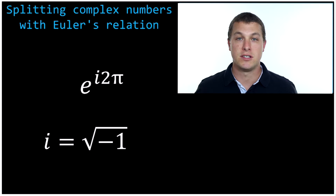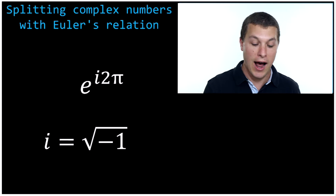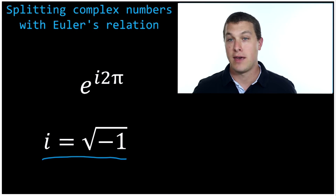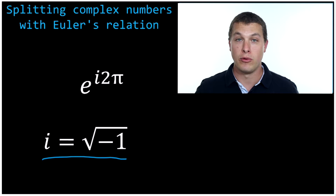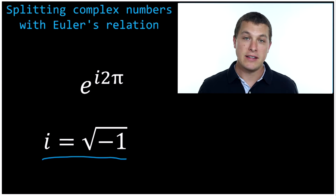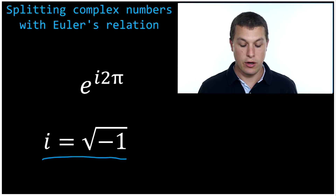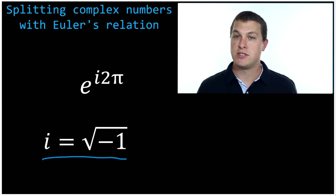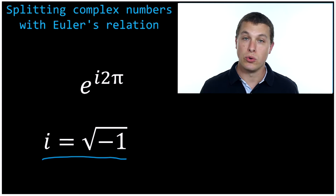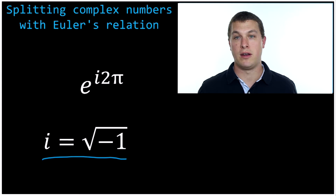A complex number is just a number with the i in it. i is actually the square root of negative one. Normally we're taught that if you have a negative number under a square root sign, you can't do anything with it. And that's still kind of true. What we do instead of resolving it or changing it is we just carry i throughout our problems — it's a tool to keep track of the square root of negative one.